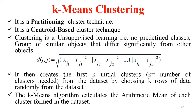What is k-means clustering? It is a partitioning, centroid-based clustering technique. This is unsupervised learning with no predefined classes. You identify similarity between different objects by calculating distances. The distance formula is: distance(i, j) = square root of [(xi1 - xj1)² + (xi2 - xj2)² + ... + (xip - xjp)²]. This is called similarity.